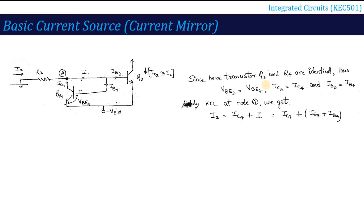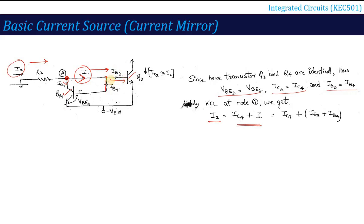According to our assumption, these two transistors are identical, so VBE3 equals VBE4, IC3 equals IC4, and IB3 equals IB4. Applying KCL at the node: the incoming current I2 is divided into two — IC4 and I. That current I further divides into IB3 and IB4. So I2 equals IC4 plus IB3 plus IB4. Since IB3 and IB4 are equal, this can be written as IC3 plus twice IB3.